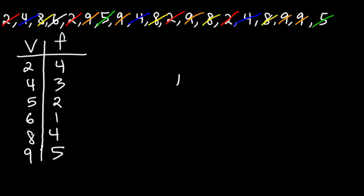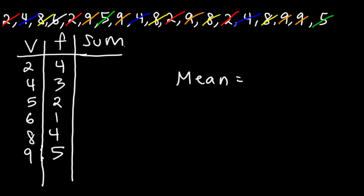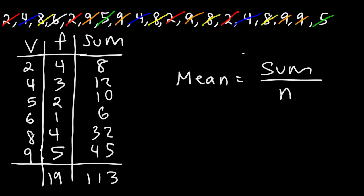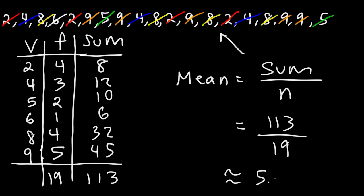Now let's calculate the mean. Let's make another column for the sum. 2 times 4 is 8, 4 times 3 is 12, 5 times 2 is 10, 6 times 1 is 6, 8 times 4 is 32, 9 times 5 is 45. Now let's add up the sum column: 8 plus 12 plus 10 plus 6 plus 32 plus 45 gives a total of 113. And 4 plus 3 plus 2 plus 1 plus 4 plus 5 is 19. So the mean is the sum divided by the number of data items: 113 divided by 19 gives us an average of approximately 5.95.